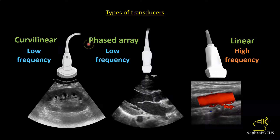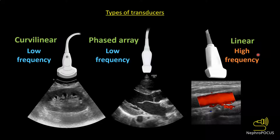Both curvilinear and phased array probes are low-frequency probes. The lower the frequency, the deeper the ultrasound beam can penetrate, but at the expense of resolution. Linear probes are high-frequency probes which offer better resolution but cannot penetrate as deeply, so they are used to image superficial structures such as AV fistulas or to guide dialysis catheter placement.